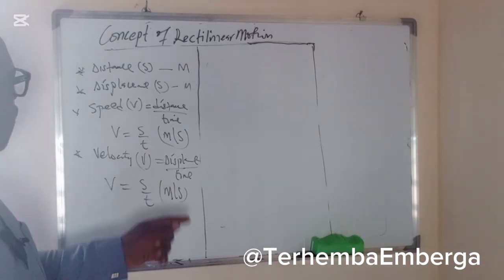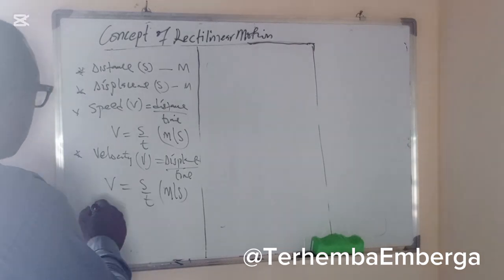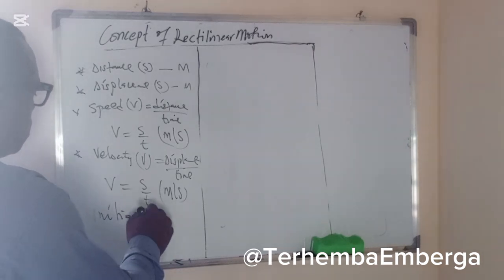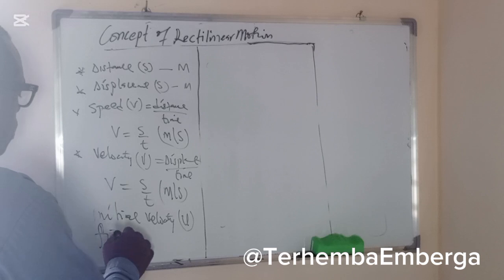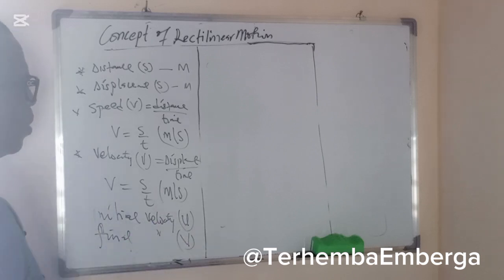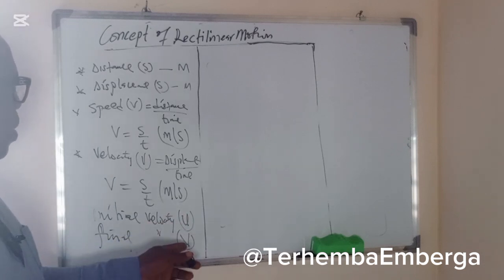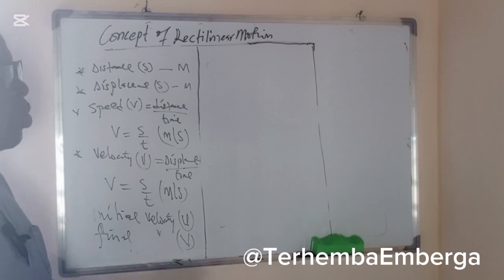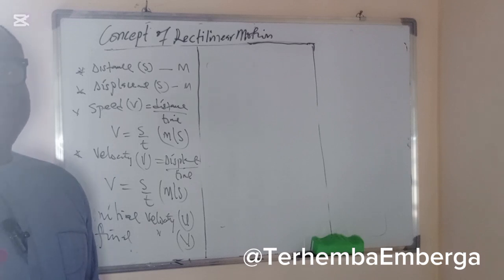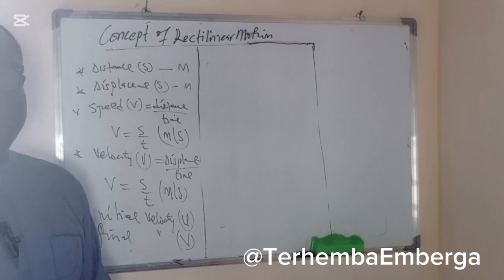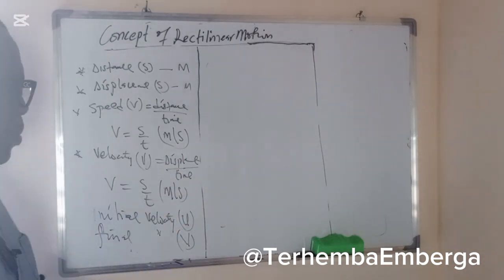We know that velocity has two types. We have what we call the initial velocity, denoted by u, and final velocity, denoted by v. When an object starts moving, it starts with an initial velocity and gets to the final velocity. Mind you, if an object is at rest, it is stationary — the initial velocity is zero. So when a question says an object starts from rest, you know that u is equal to zero.